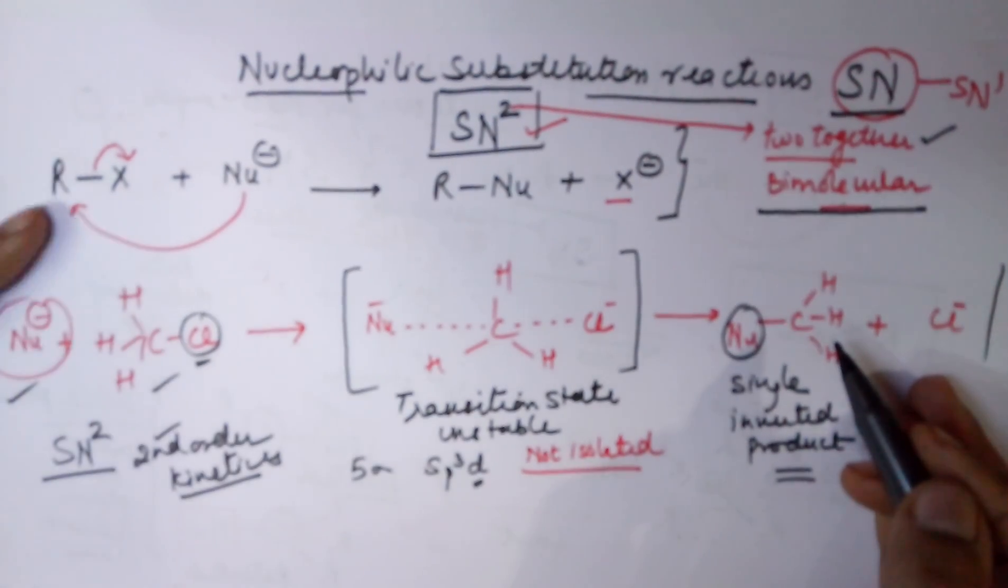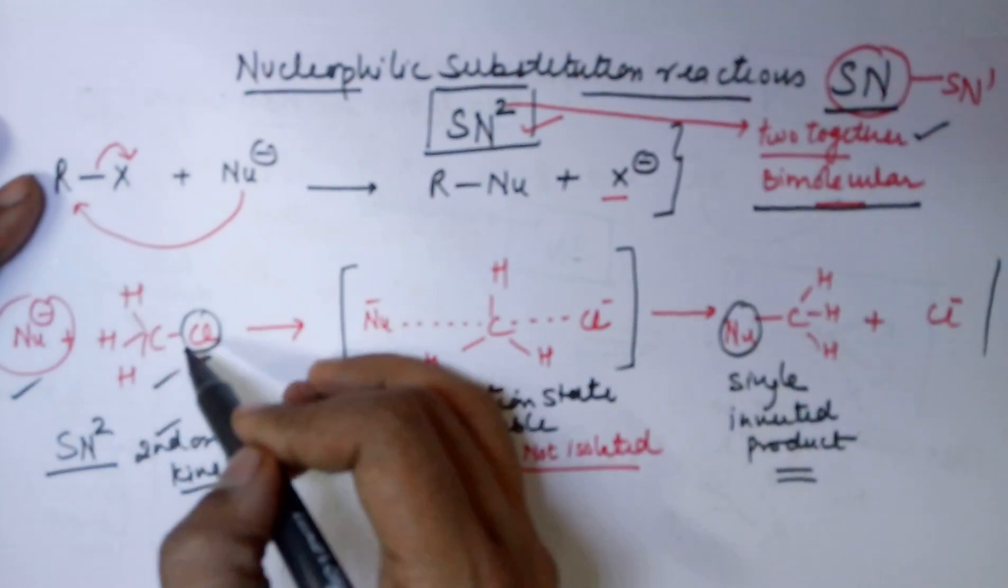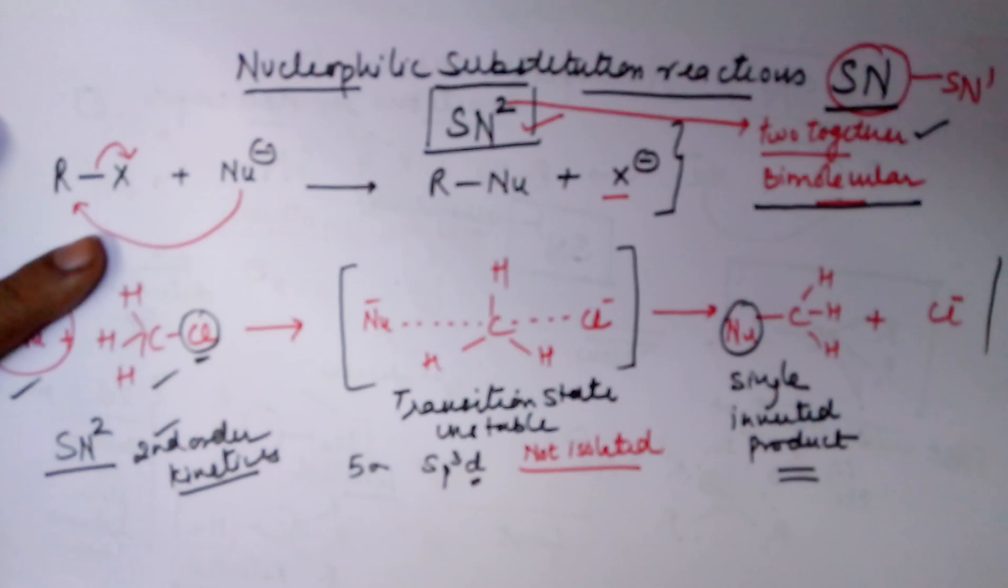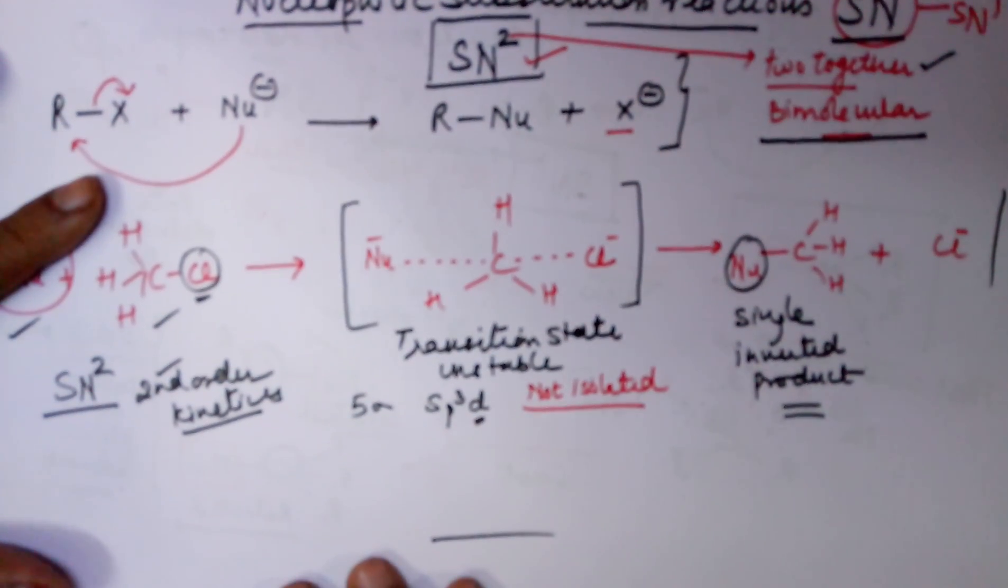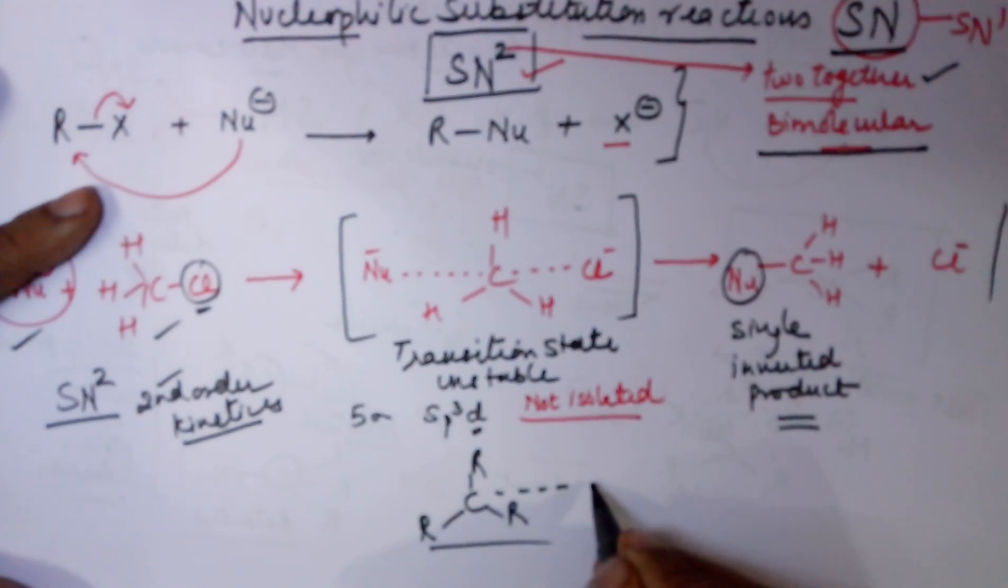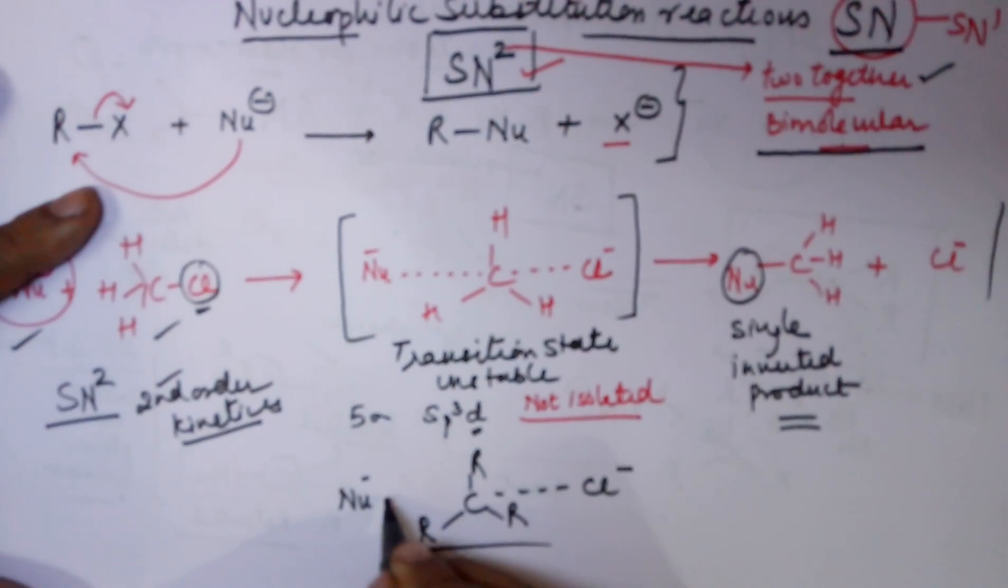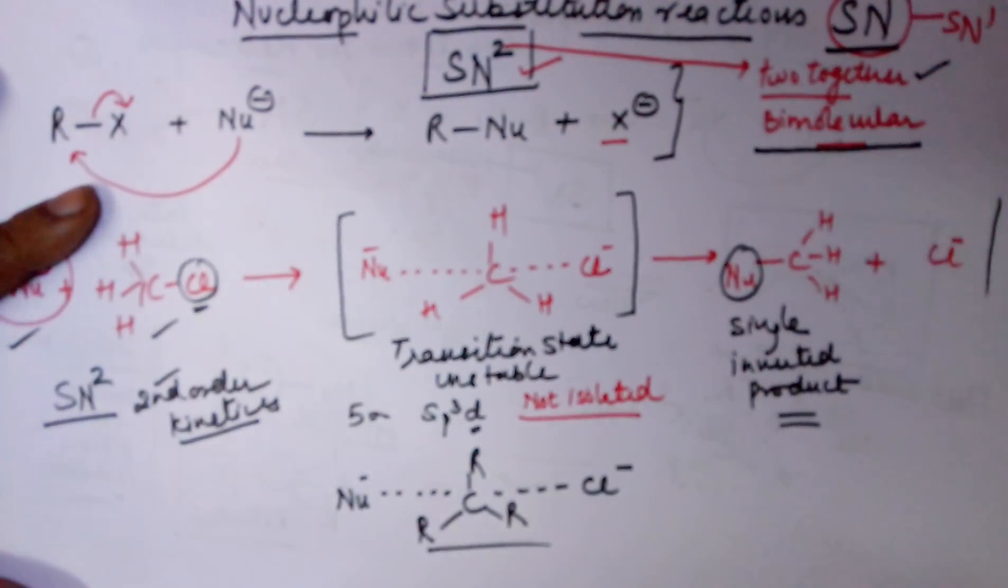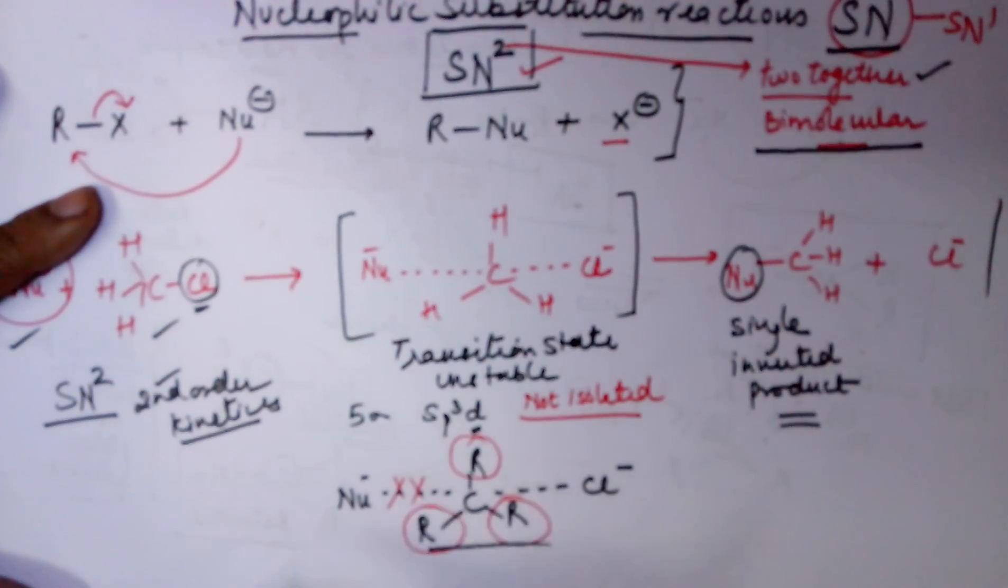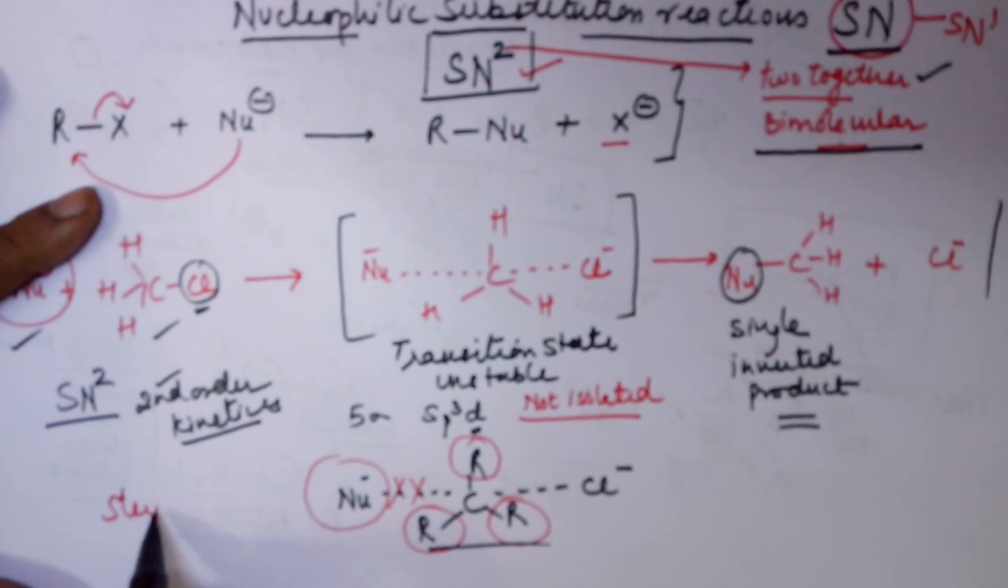The other important thing is that I have deliberately taken an alkyl halide which is primary. Had these three hydrogens been R groups, which means your reaction would have been something like this, where you would have had a carbon with three R groups, a leaving halide and an attacking nucleophile. This attack would have been difficult. Why so? The presence of bulkier R groups would not have allowed this to attack. This fact is called as steric hindrance.